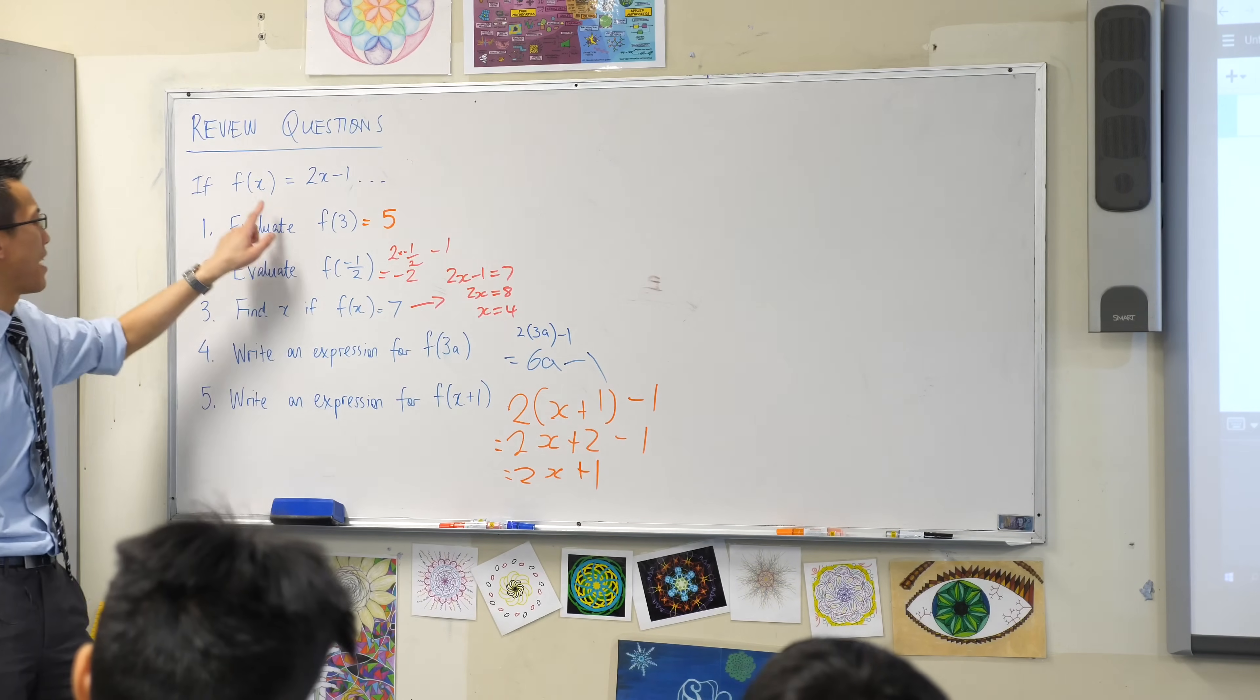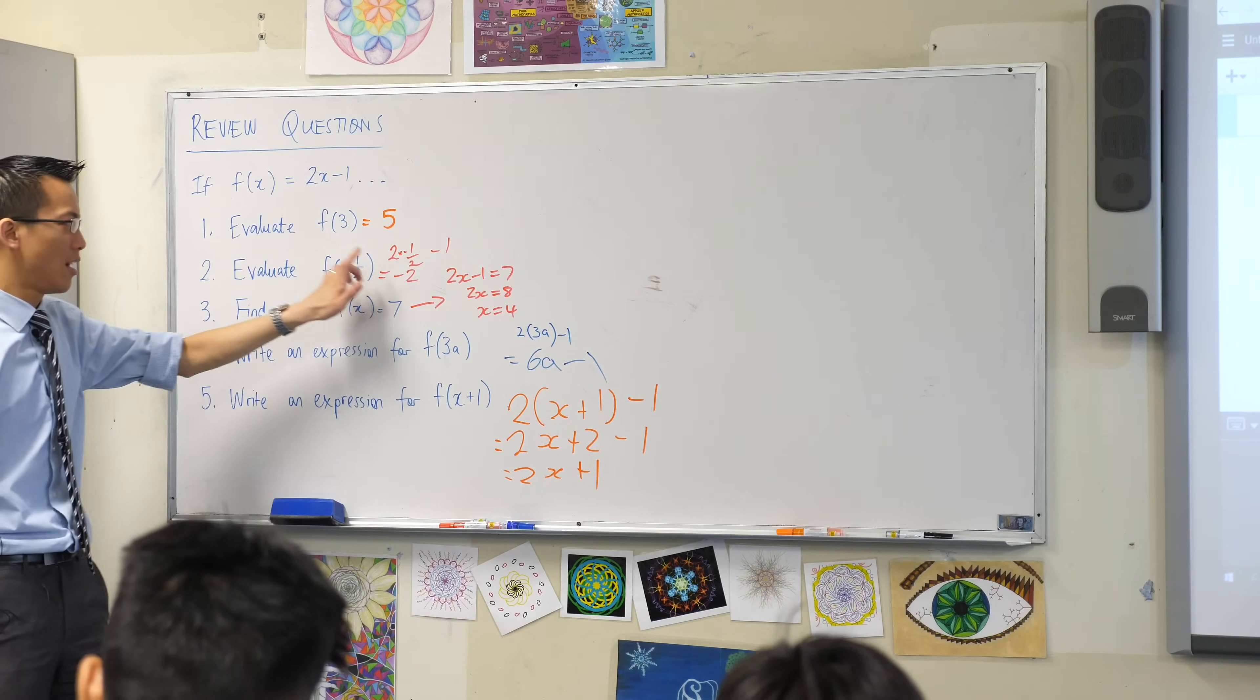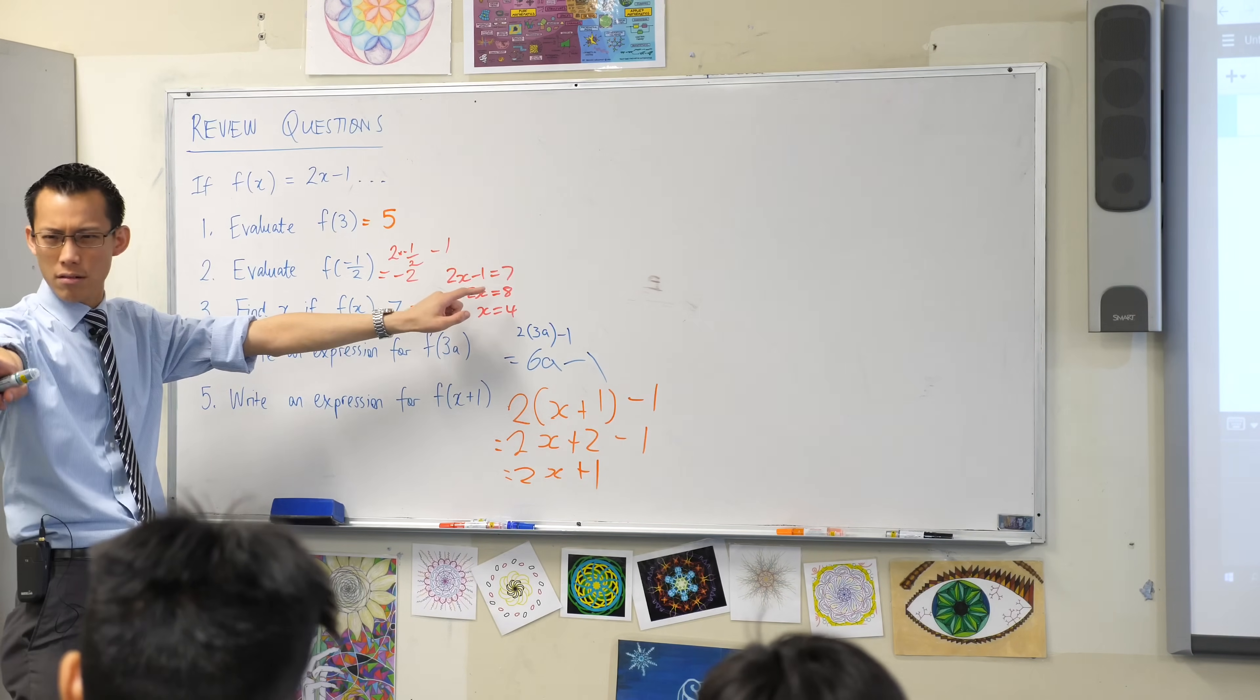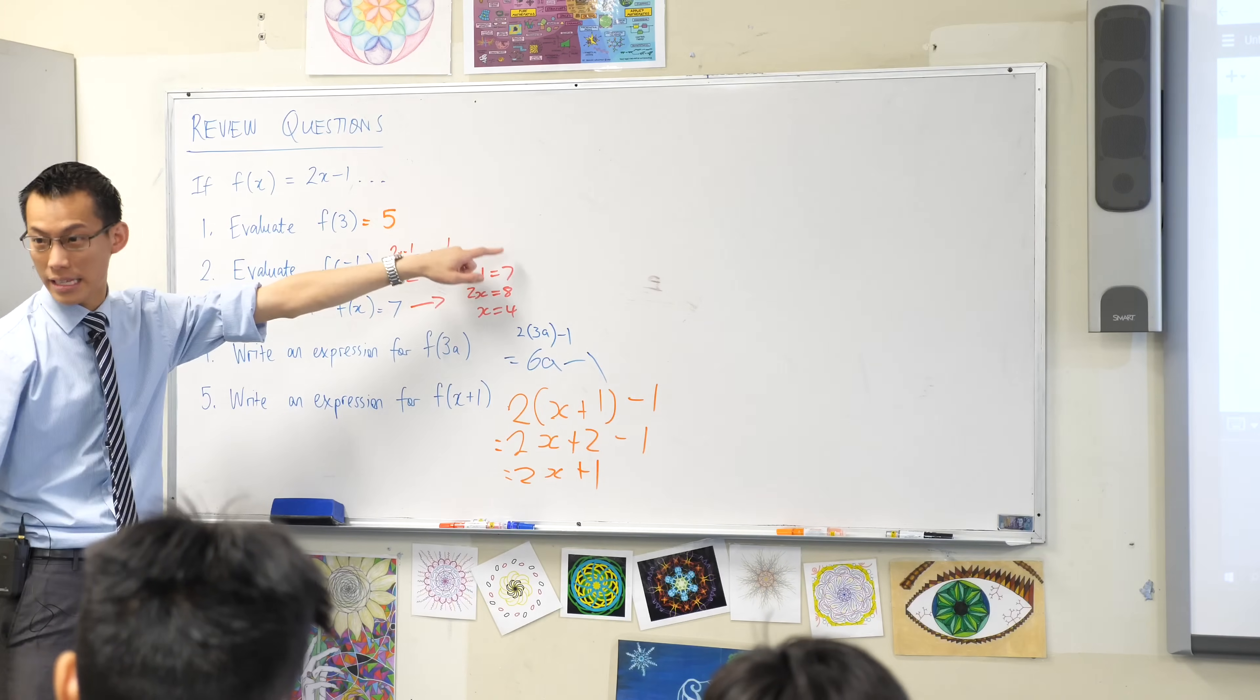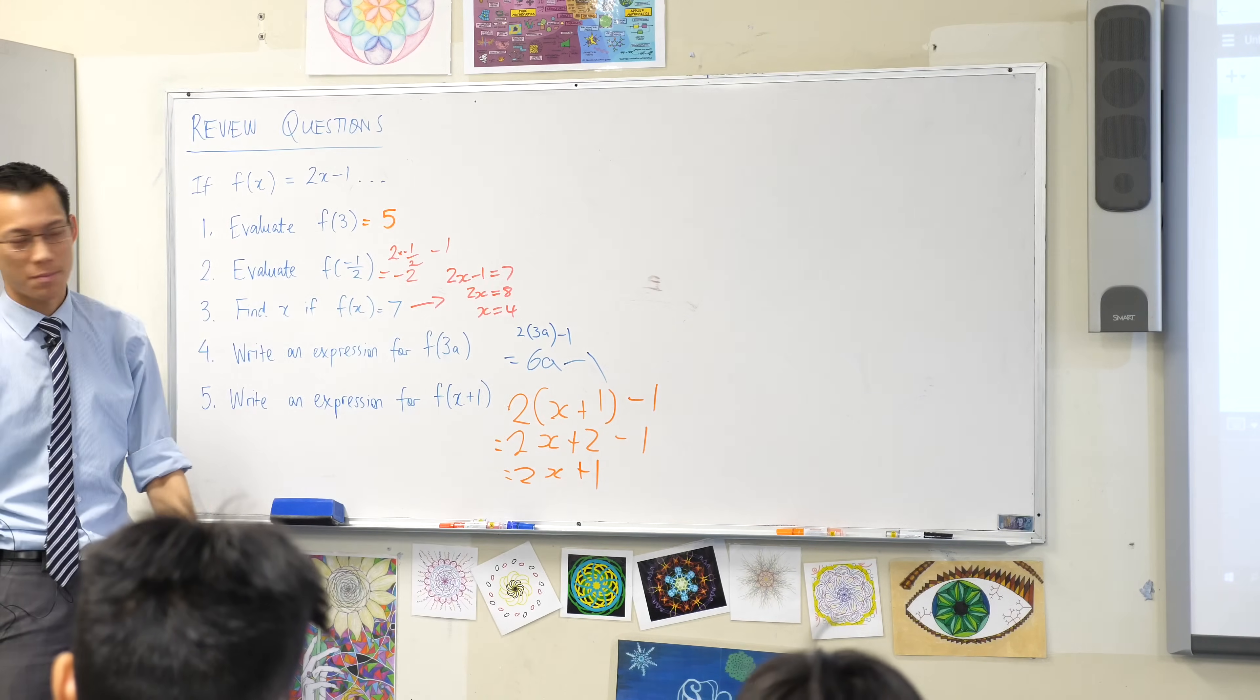If f of x equals 7, then that's this thing on the left hand side, you see that? So that's why Brian wrote 2x minus 1, that's f of x, is 7. And then off he goes, he solves, okay?